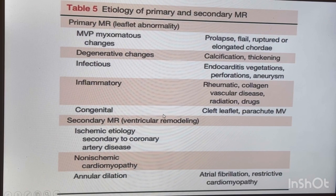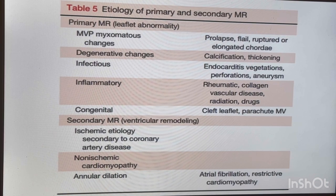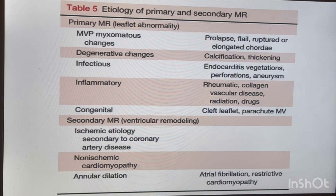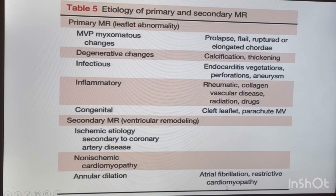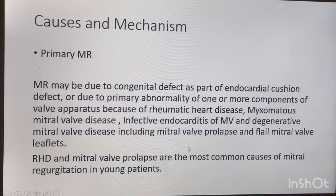Secondary mitral regurgitation can have an ischemic etiology related to coronary artery disease, especially right coronary artery disease — for example inferior wall MI as I mentioned in the last video — and also annular dilatation, especially in atrial fibrillation and restrictive cardiomyopathy. These are the main causes of secondary mitral regurgitation.